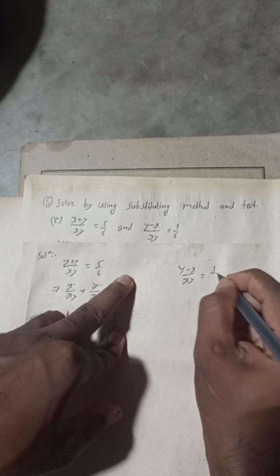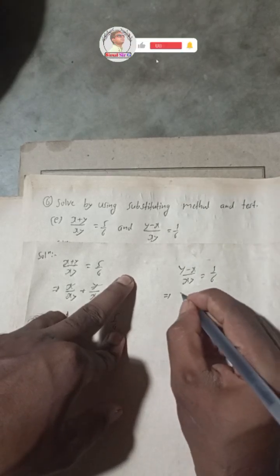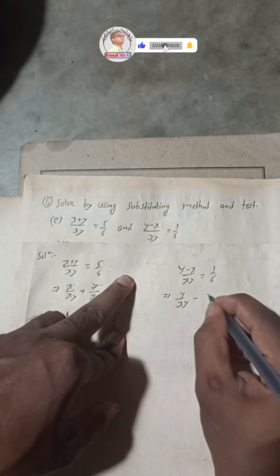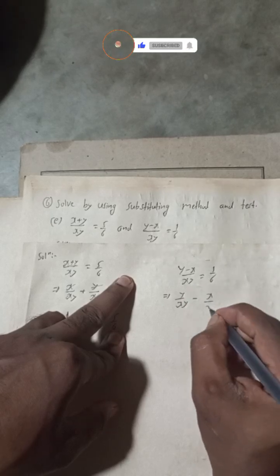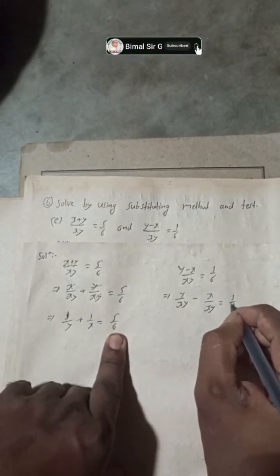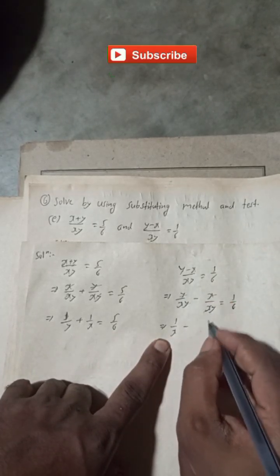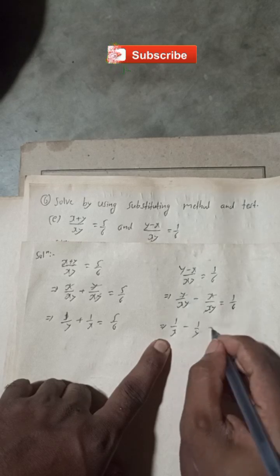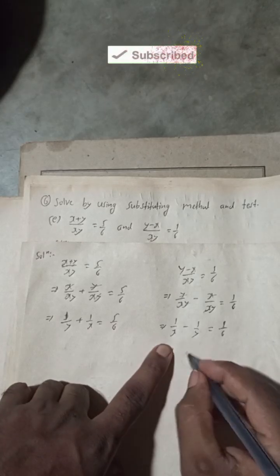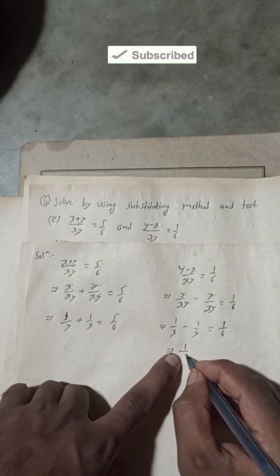For the second equation: (y - x) / xy = 1/6. Split this as y/xy - x/xy = 1/6. The y's cancel and x's cancel, giving us 1/x - 1/y = 1/6.